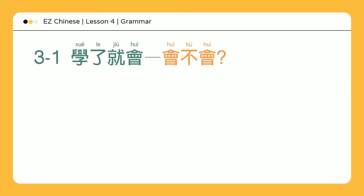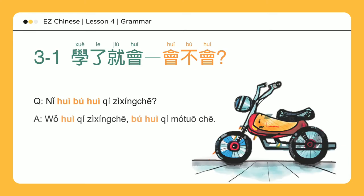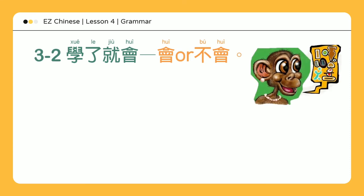会不会 — Are you able to or not? 你会说华语吗? — Do you know how to speak Chinese?